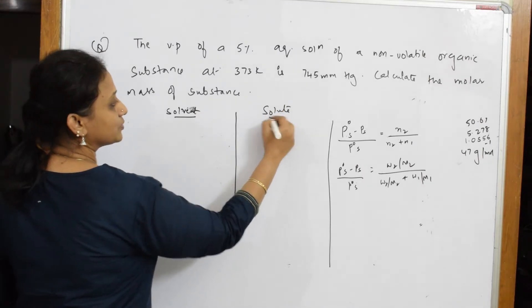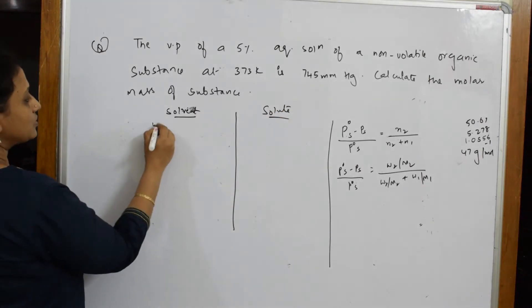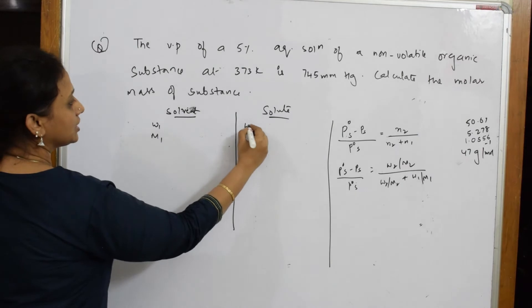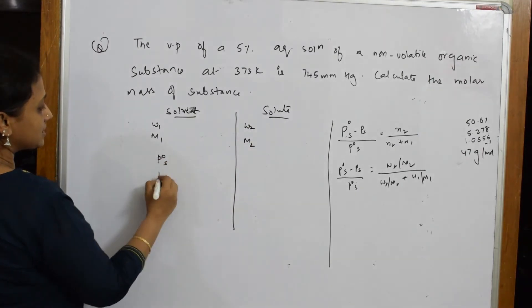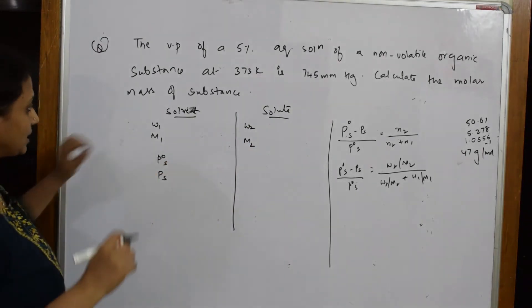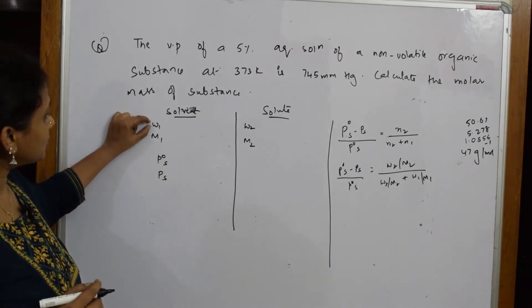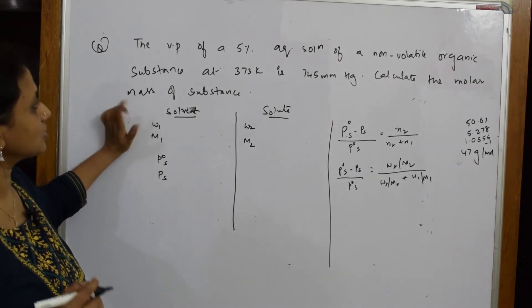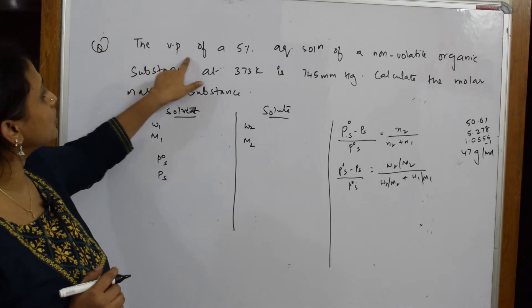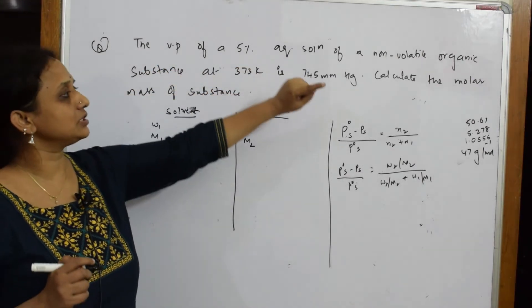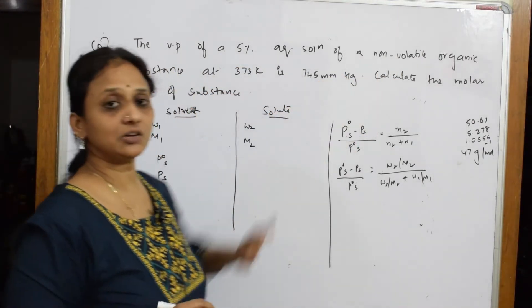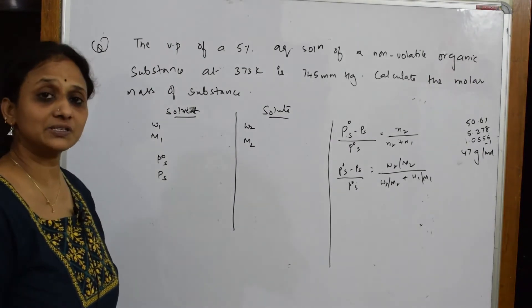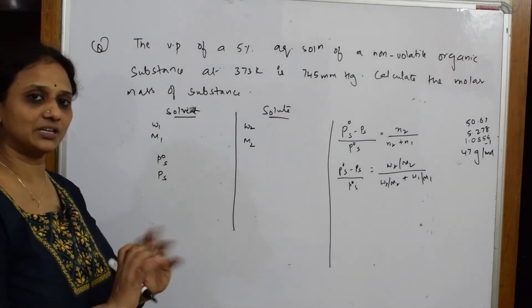I very well know w1, m1, w2, m2, p0s, ps - all these are required. But let's see for the solvent, is w1 given to me or not? So they gave me the vapor pressure of a five percent aqueous solution of non-volatile organic substance. It's a five percent aqueous solution - in that concept only everything is there.